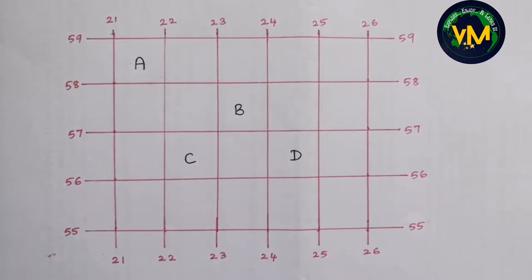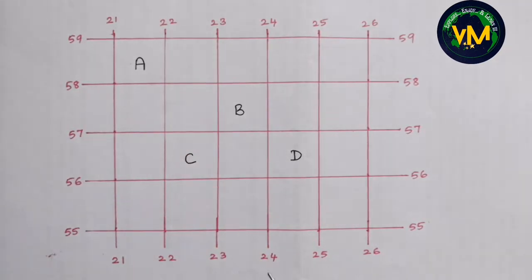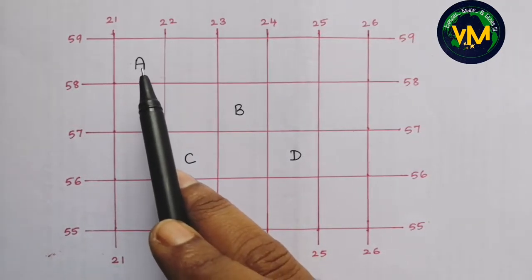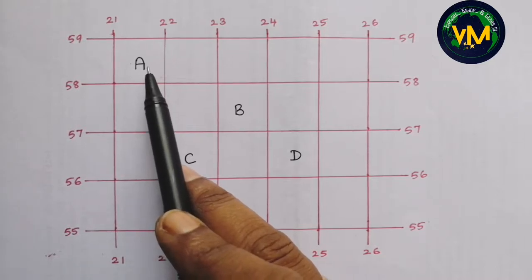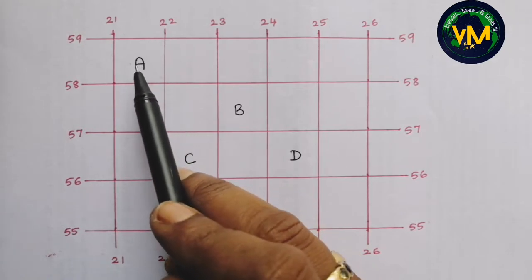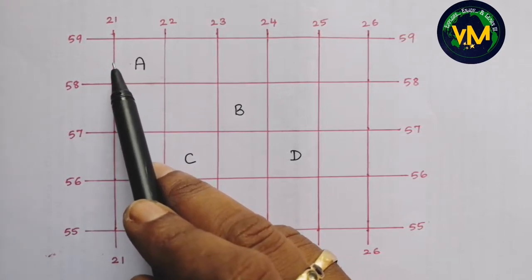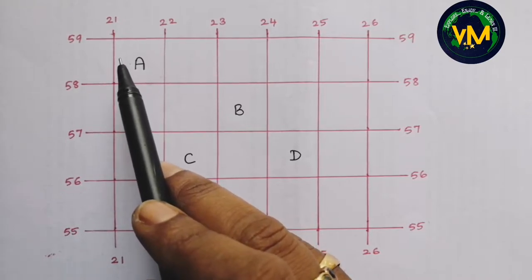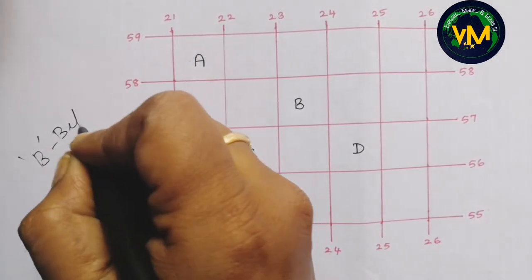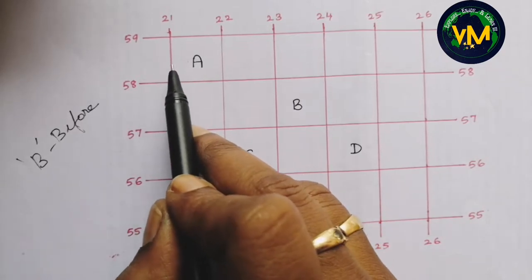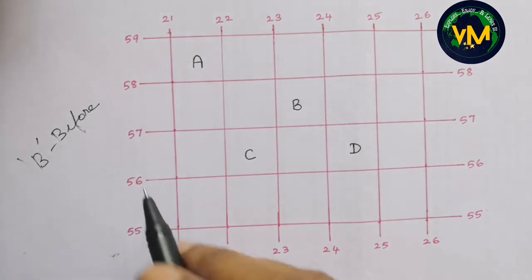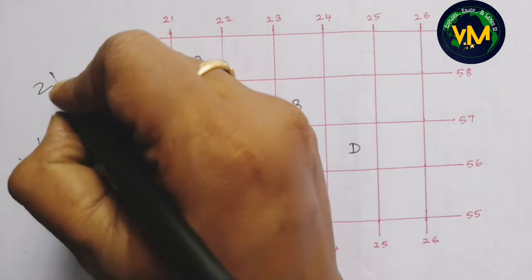Here is a rough grid to teach you four-figure grid reference. These are eastings — numbers increasing towards east — and these are northings — numbers increasing towards north. For finding the four-figure grid reference of place A: four digits, first two are eastings, then northings. These are the eastings near place A. Remember the B rule — B stands for 'before.' The easting that is before the place has to be read. So here we have 21 as the first two digits.